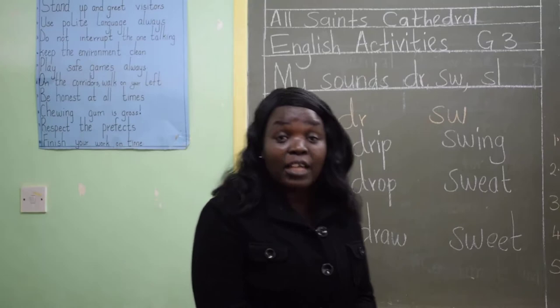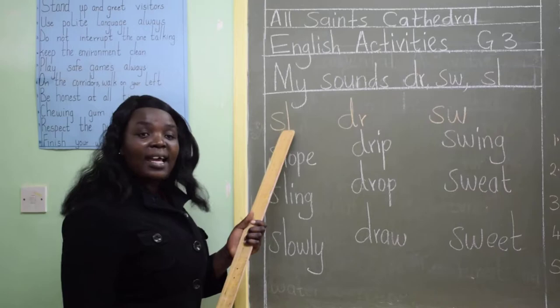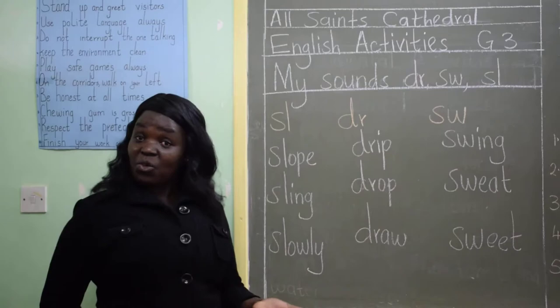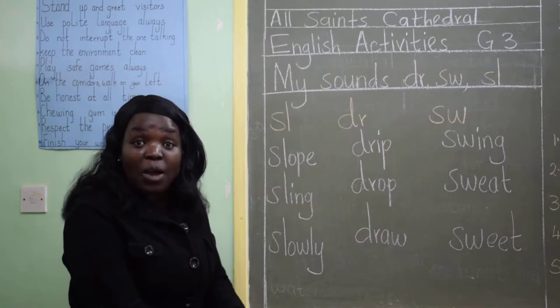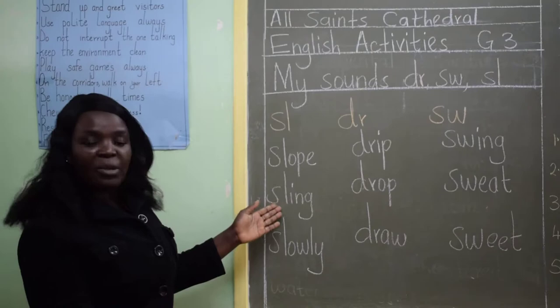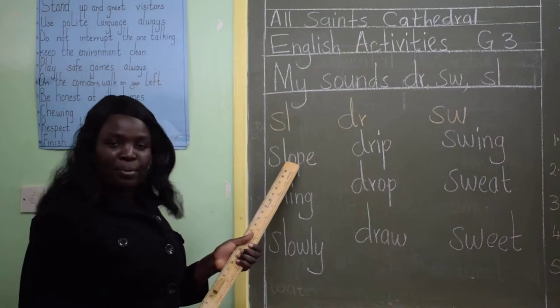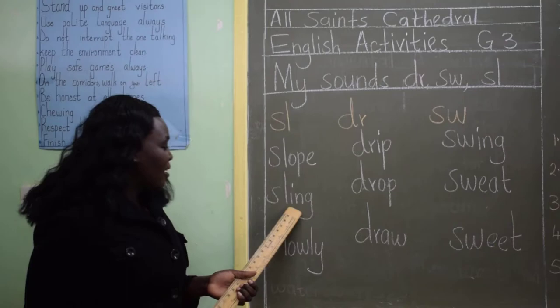So we will start with SL. When those two sounds combine, we can name different words. And I know even you at home, you know different words that can be used using this blend. I have come up with some of them. The first one is slow. The second one is sling. Then slowly.